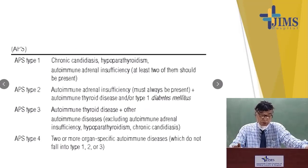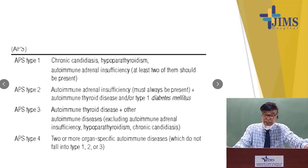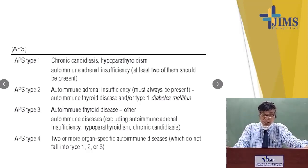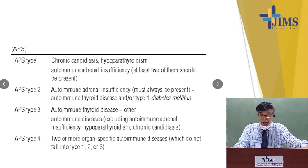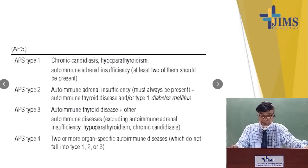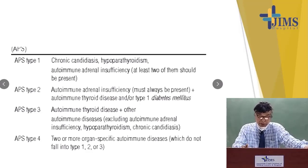There are also autoimmune polyglandular syndromes: type 1, 2, 3, and 4. APS type 1 includes chronic candidiasis, hypoparathyroidism, and autoimmune adrenal insufficiency — at least two must be present. APS type 2: autoimmune adrenal insufficiency must always be present along with autoimmune thyroid disease and/or type 1 diabetes. APS type 3: autoimmune thyroid disease plus other autoimmune diseases. APS type 4: two or more organ-specific autoimmune diseases not falling into types 1, 2, or 3.